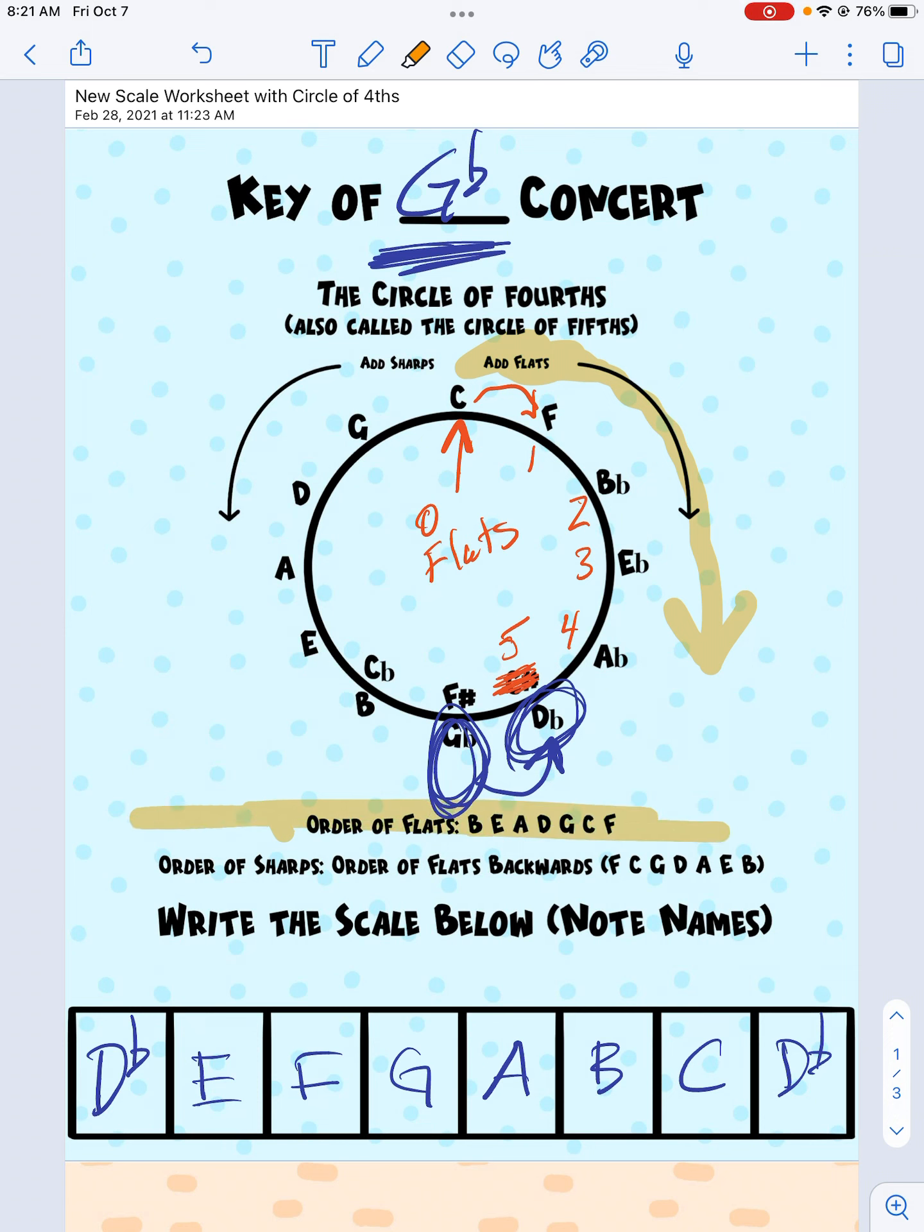How do I know which flats they are? That's right here. The order of flats is B, E, A, D, G, C, F. I always just remember it by saying B-E-A-D-G-C-F. It's kind of a non-word, but it helps me.